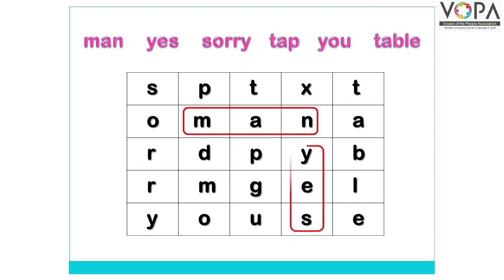यह रहा Yes। अगला word है Sorry — Sorry की spelling है S-O-R-R-Y। तो इसकी spelling हमें कहाँ नज़र आ रही है? हाँ, हमें यह यहाँ पर नज़र आ रही है — तो हमने Sorry इस word को यहाँ पर तलाश किया।